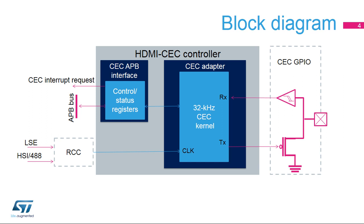Two clocks are available for the HDMI CEC controller: the APB clock or PCLK for the APB interface, and the 32 kHz kernel clock for the CEC adapter. The kernel clock can be derived from LSE or HSI divided by 488 clock sources.